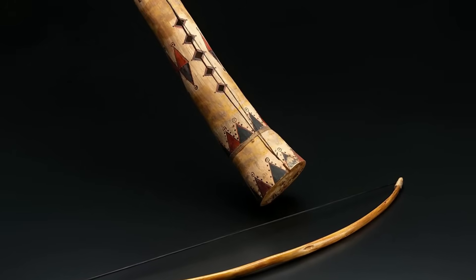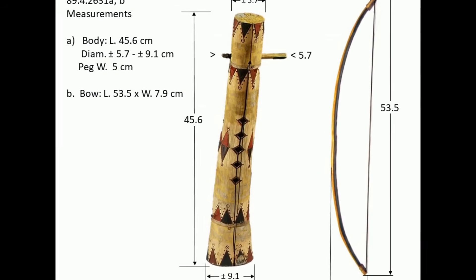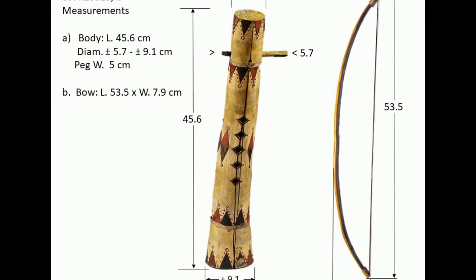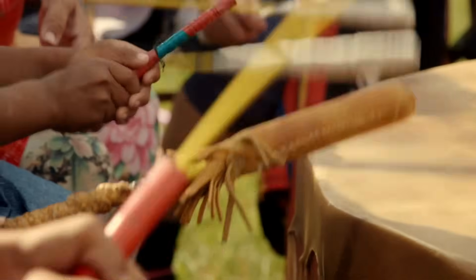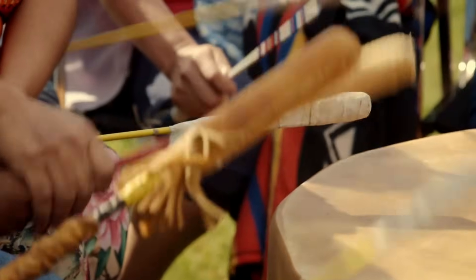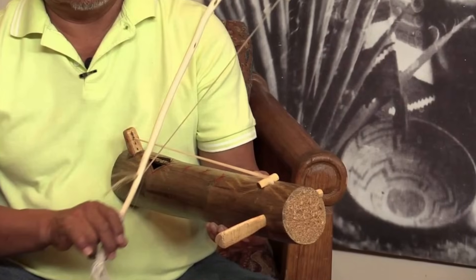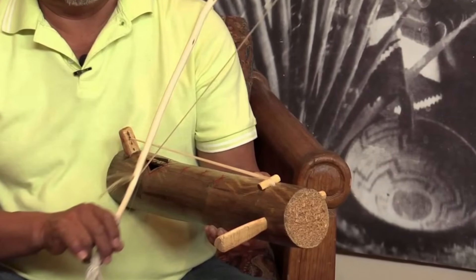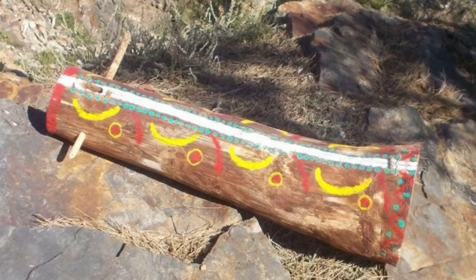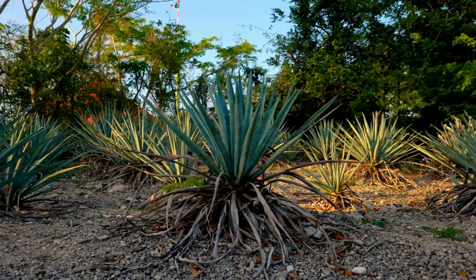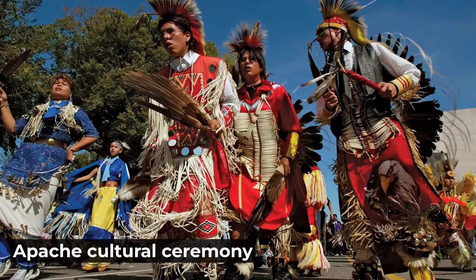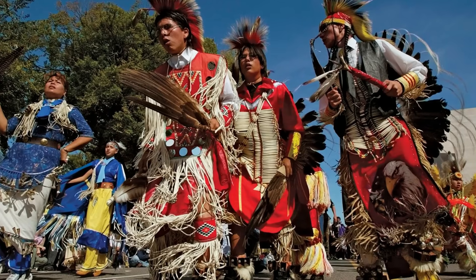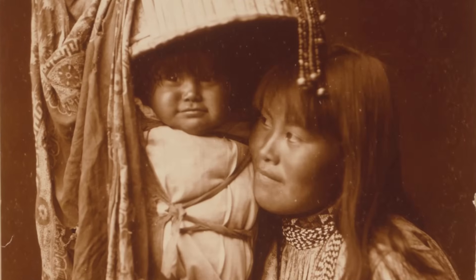Perhaps most remarkable among Apache cultural innovations is the Apache fiddle, or Tsii' edo' a'tl, literally meaning 'wood that sings.' This unique indigenous bowed instrument, constructed from agave stalks or corn stems with horsehair strings, has been documented since the 19th century. Unlike other native American musical traditions that primarily employ drums, flutes, and vocal music, the Apache fiddle tradition suggests either independent invention or creative adaptation of European string instrument concepts, with its construction from local desert plants demonstrating innovative southwestern adaptation.